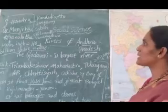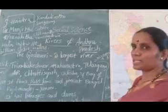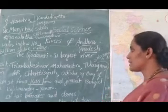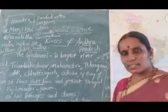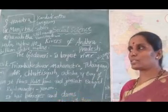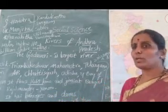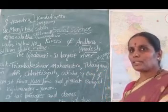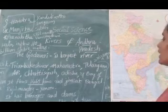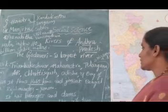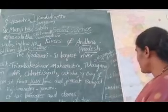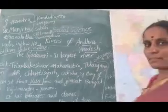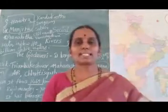The tributaries of Godavari include Pranahita, Chitravati, and Vamshadhara. At Rajamandri, it splits into two. It takes its mouth at Yanam. I hope you have understood, children — about river Godavari.